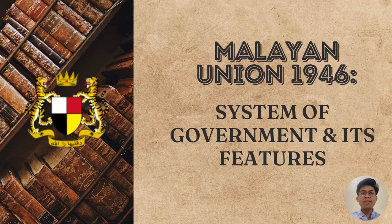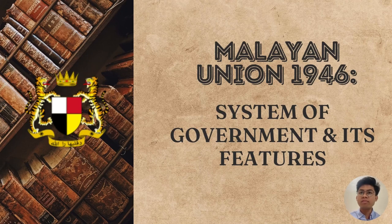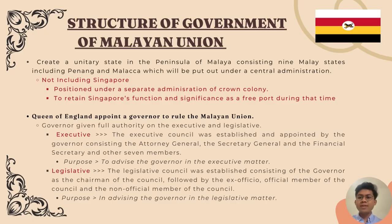Now we will discuss the Malayan Union 1946, covering the system of government and its features: the structure of government, citizenship, rights and privileges, control and ruling by the Royal Institution, and support or opposition. Regarding the government structure, the main goal as outlined by the British was to create a unitary state in the peninsula of Malaya consisting of nine Malay states including Penang and Melaka, placed under a central administration.